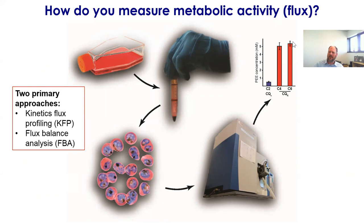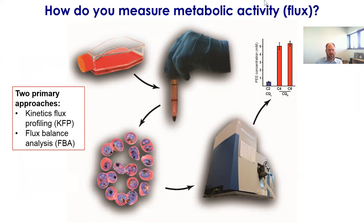So how can we study the activity of a network and measure metabolic flux? There are two primary approaches: one is kinetics flux profiling, KFP, and the other is flux balance analysis, FBA. We're going to learn about both.